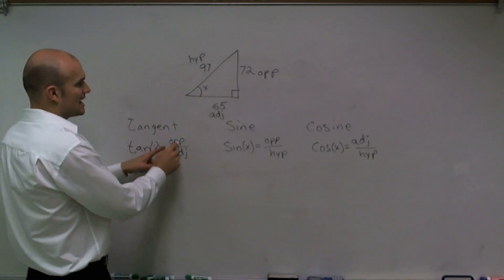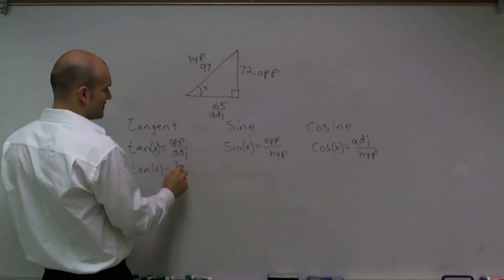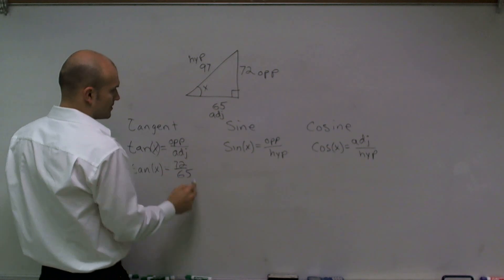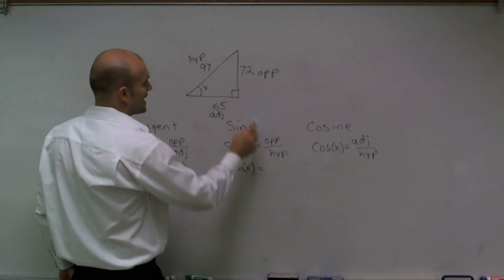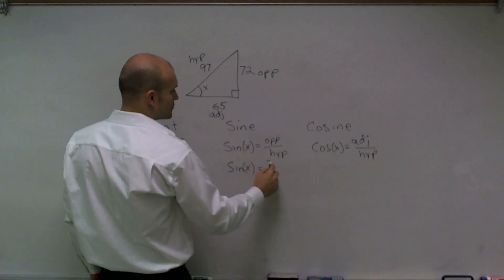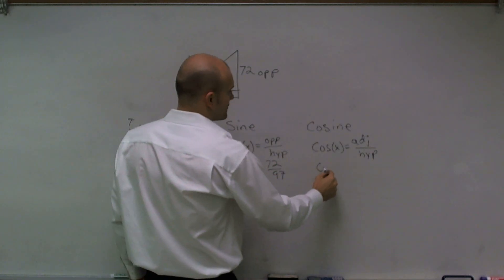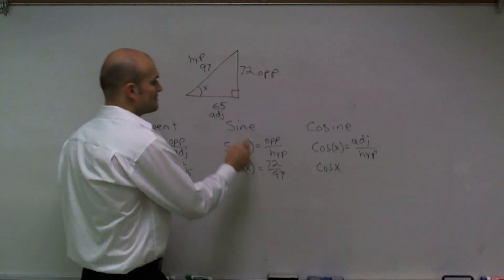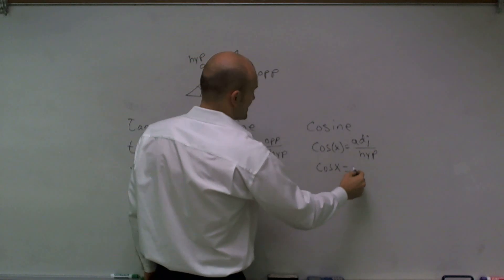The tangent of x means the opposite, which is 72, over my adjacent, which is 65. Sine of x is going to be the opposite over my hypotenuse, which is 72 over 97. And the cosine of x is my adjacent side, 65, over my hypotenuse, 97.